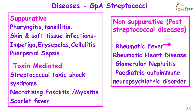The diseases caused by group A streptococci can be suppurative, toxin-mediated, or non-suppurative. Suppurative diseases include pharyngitis, tonsillitis, skin and soft tissue infections like impetigo, erysipelas, cellulitis, and gynaecological infections like puerperal sepsis. Toxin-mediated diseases include streptococcal toxic shock syndrome, necrotizing fasciitis or myositis, and scarlet fever. Non-suppurative post-streptococcal diseases include rheumatic fever — sometimes leading to rheumatic heart disease — glomerulonephritis, and pediatric autoimmune neuropsychiatric disorders (PANDAS).